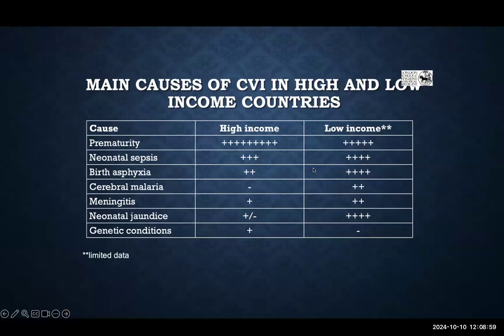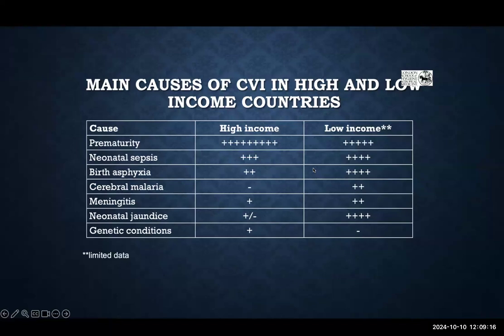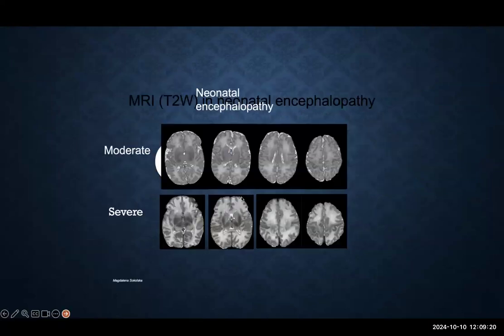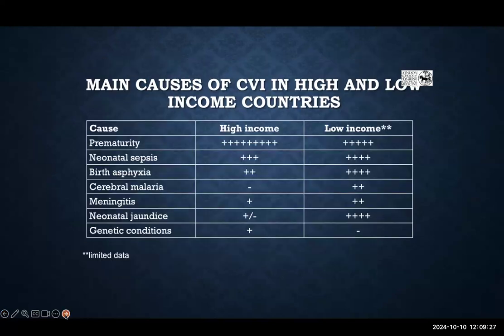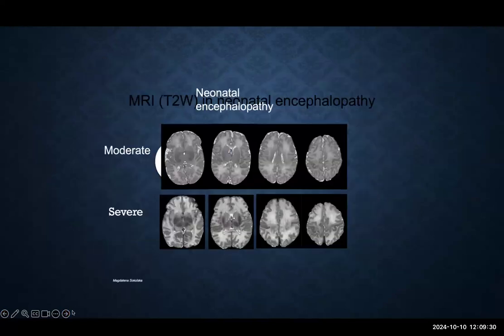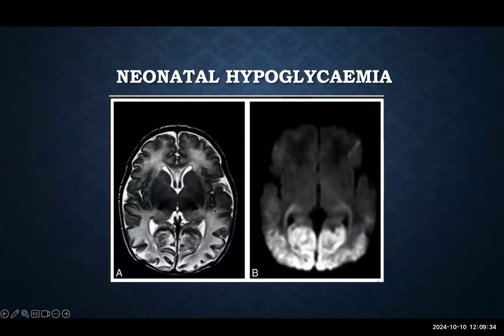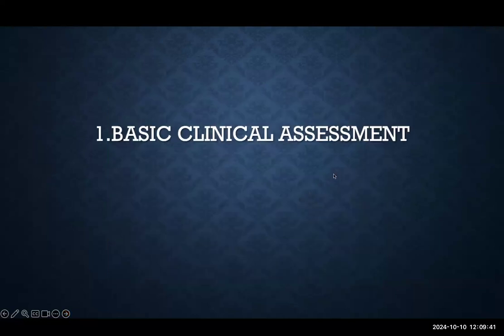There are differences in the causes of cerebral visual impairment between higher and lower income countries. This mainly relates to the fact that extremely premature babies, who are at high risk, are less likely to survive in low-income countries, and malaria is more of an issue in Africa. Neonatal encephalopathy and neonatal hypoglycemia, which has a predilection for the back of the brain — the occipital lobes — are also important causes.